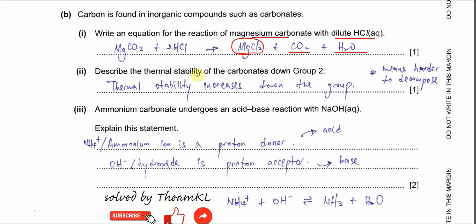Part two: describe the thermal stability of carbonates down group 2. Thermal stability refers to how stable a compound is when heated. Down group 2, carbonates become harder to decompose, so thermal stability increases — they are more thermally stable. The explanation involves the polarizing power of the group 2 cations: down the group, the charge density of group 2 cations decreases, so the polarizing power is weaker and the C–O bonds are not weakened by the cations. This explanation is required in A2.